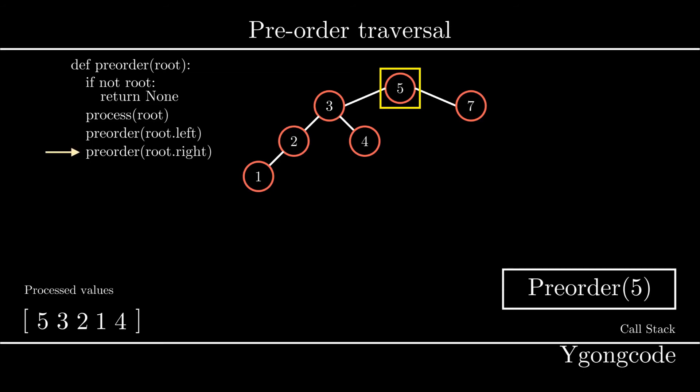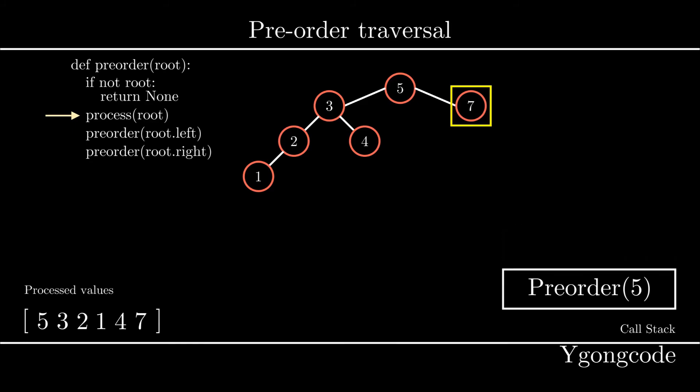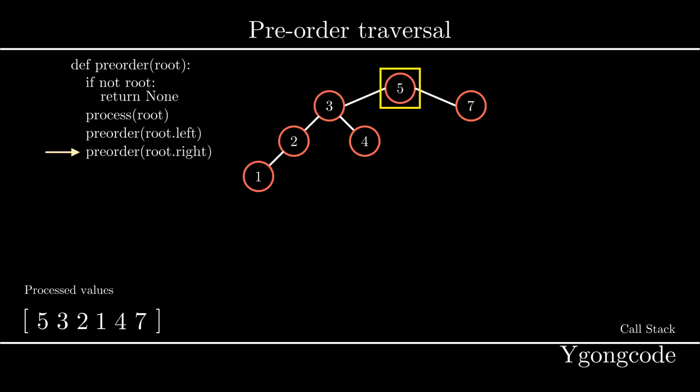Since we finished traversing all of pre-order 3, we pop pre-order 3 off the stack and process pre-order 5. Since pre-order 5 has 7 as its right subtree, we push pre-order 7 into the call stack. We process the value 7 and see that there are no subtrees left in 7, so we are done. We pop pre-order 7 off the call stack and go back to pre-order 5. At that point, pre-order 5 is also completed, so we exit and pop pre-order 5 off the stack. Since our call stack is now empty and we have visited every node, we have finished our traversal.